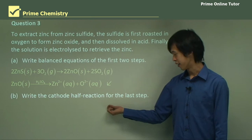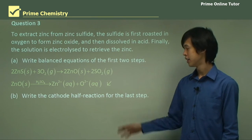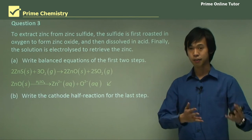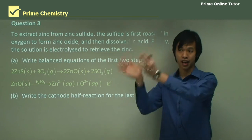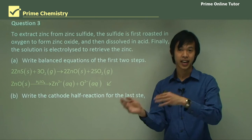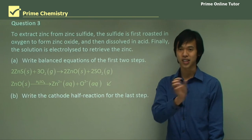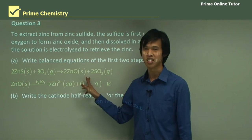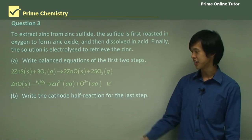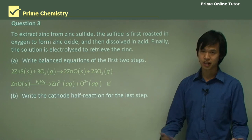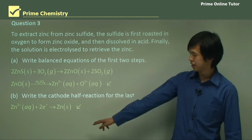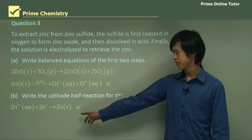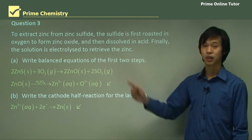Now write the cathode half reaction for the electrolysis step. From the adage 'Red Cat An Ox' — reduction happens at the cathode. The Zn²⁺ will reduce because the oxide can't reduce further. So the zinc is reducing. Reduction means gaining electrons, so we add two electrons to Zn²⁺ to get back to pure zinc — Zn²⁺ + 2e⁻ → Zn — because we want pure zinc out.